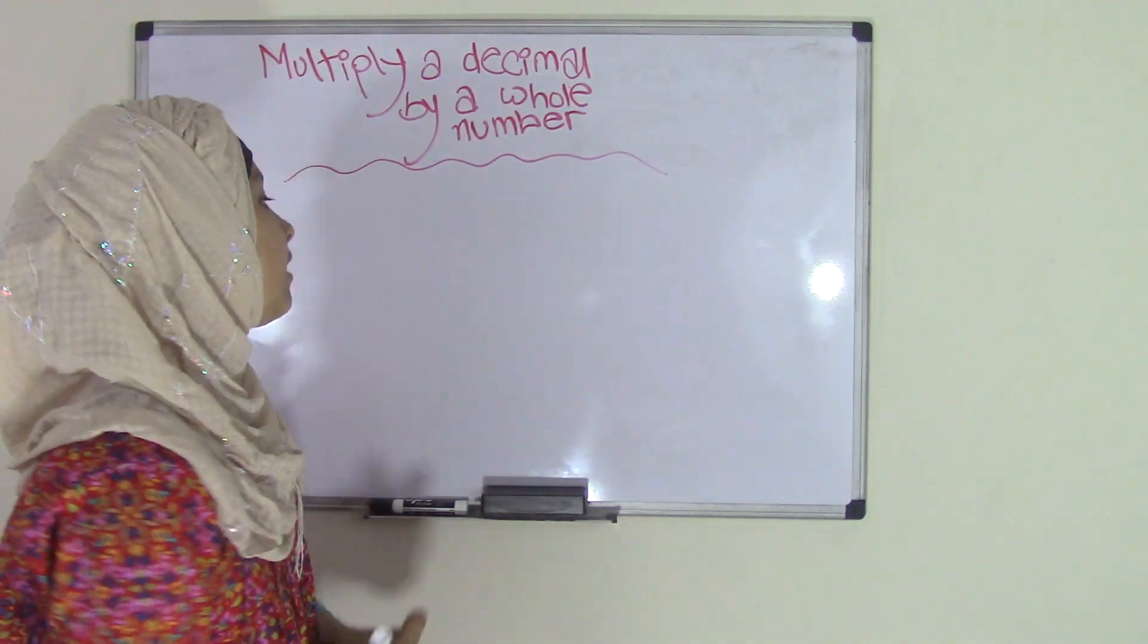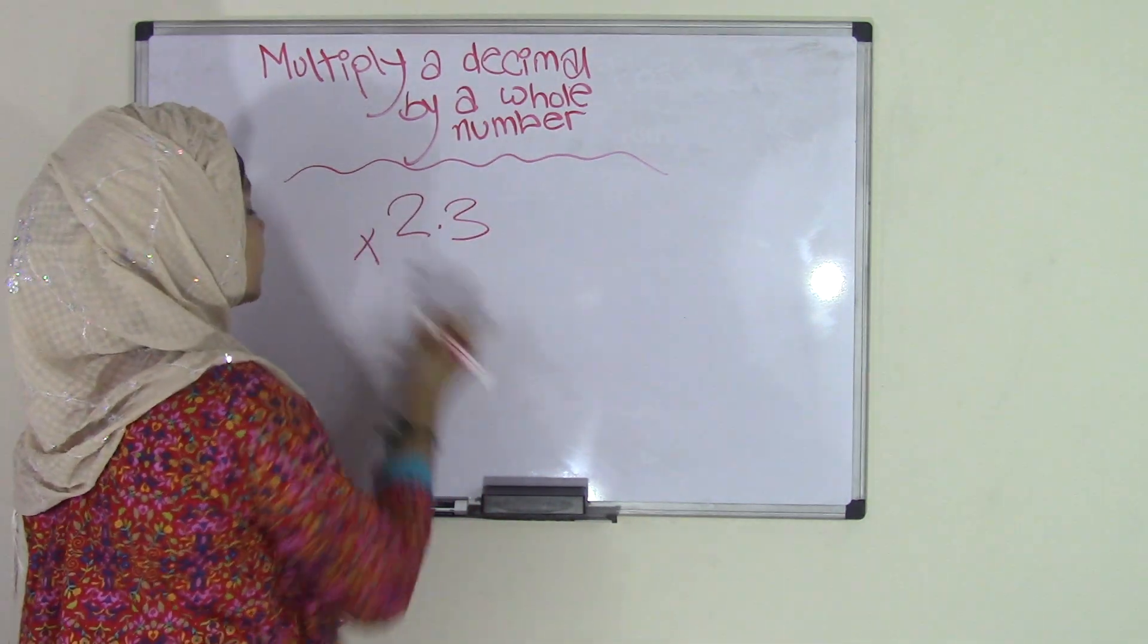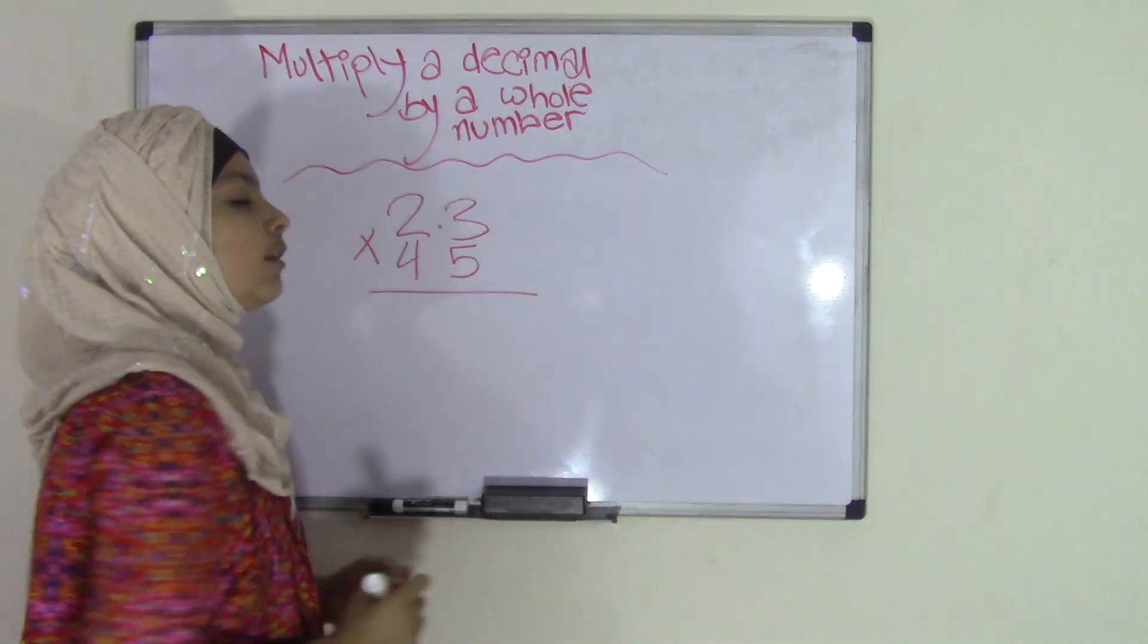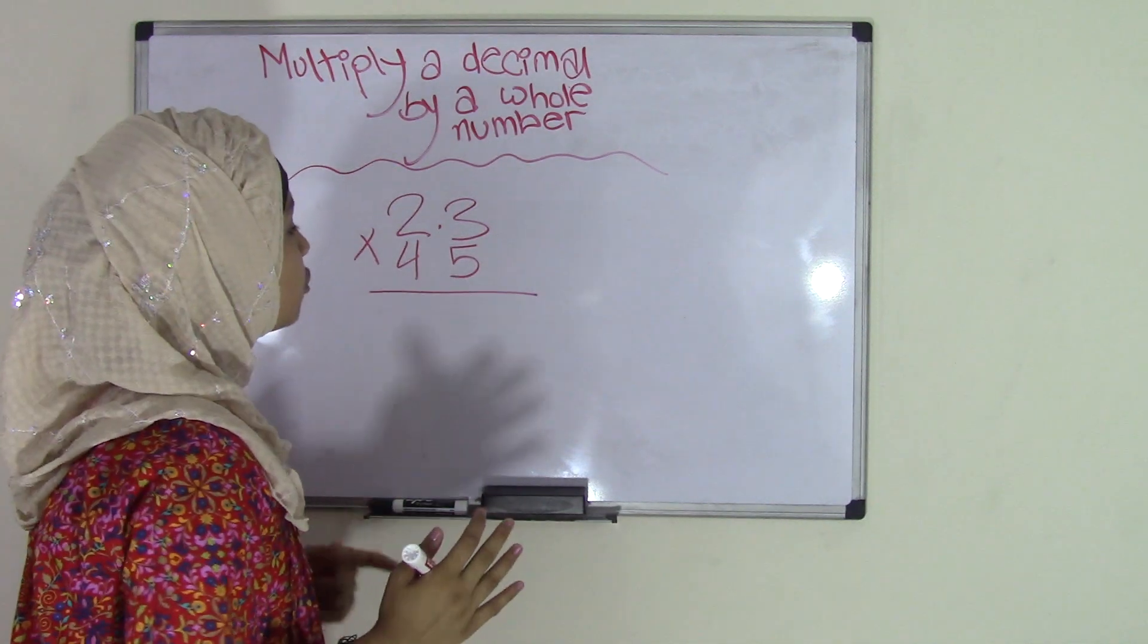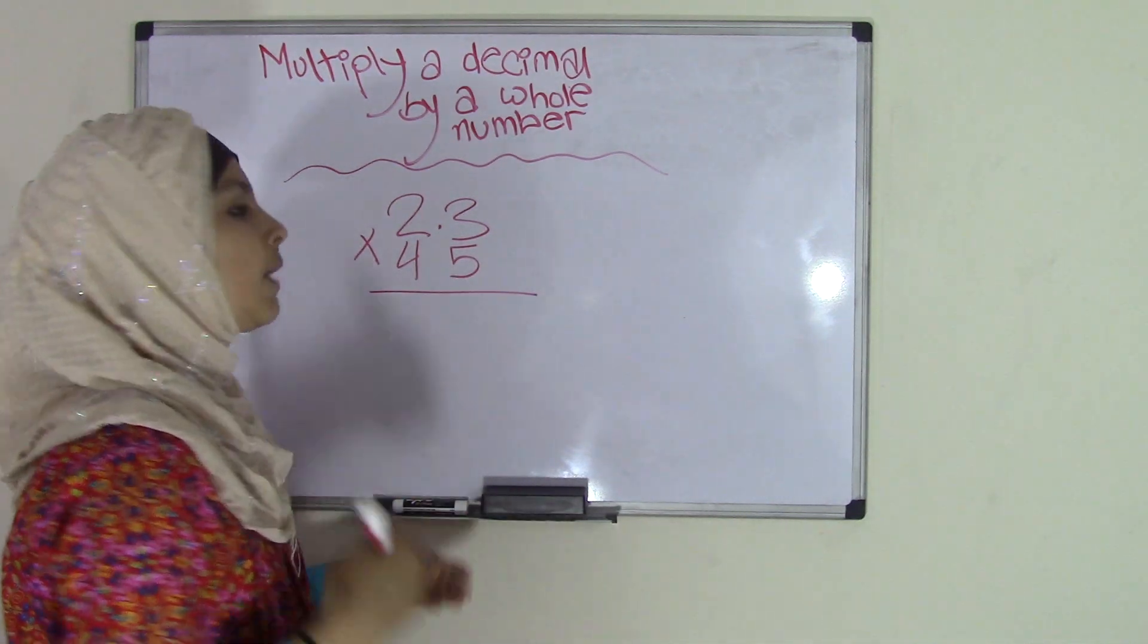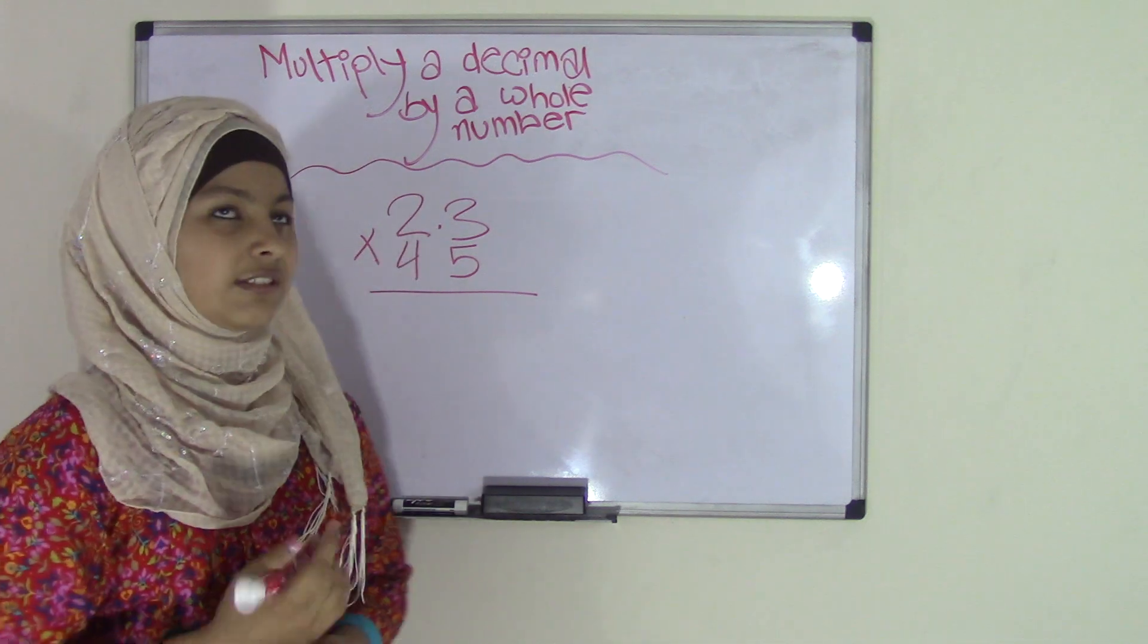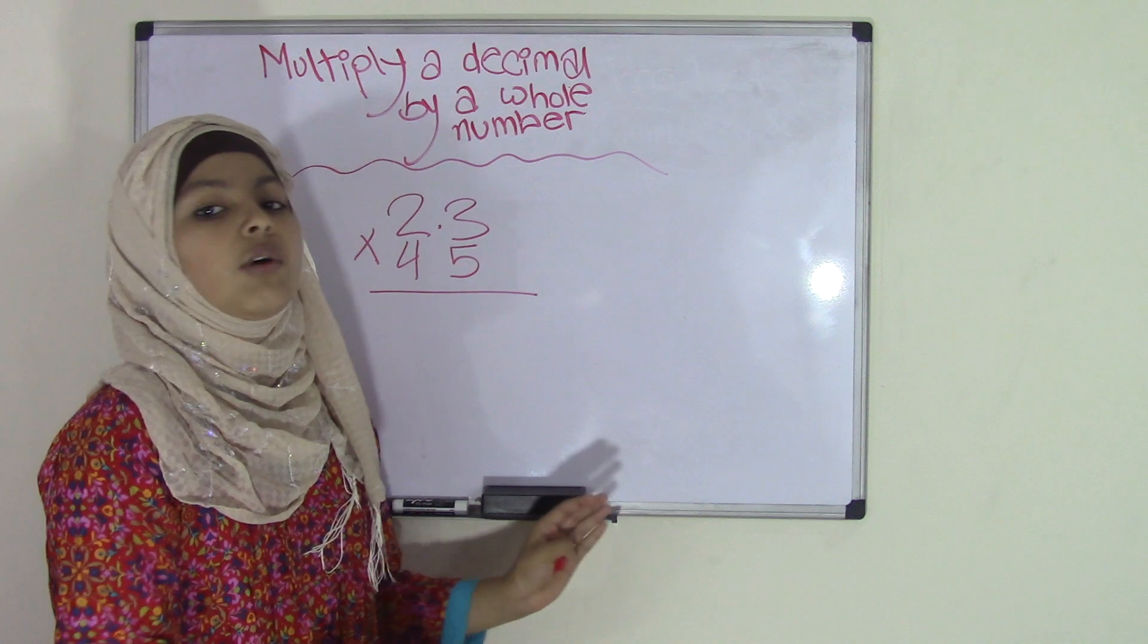So, let's say we have 2.3 times 45. You do not need to worry about estimating the 2.3. All you have to do is do simple multiplication. But sometimes, people get confused with the decimal point. What am I supposed to do with that? Do I have to add it in or something? Well, guess what? No. It's really easy.